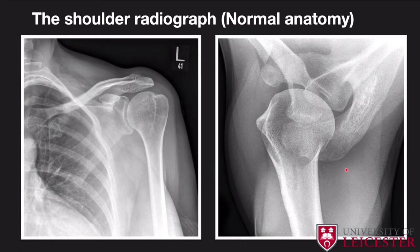Now let's cover the shoulder radiograph. Starting with the collarbone — the clavicle — you have a medial and lateral end. It articulates with the acromion, and this joint is commonly called the acromioclavicular joint. The next key structure is your scapula, which has quite a lot of protrusions and components to it.